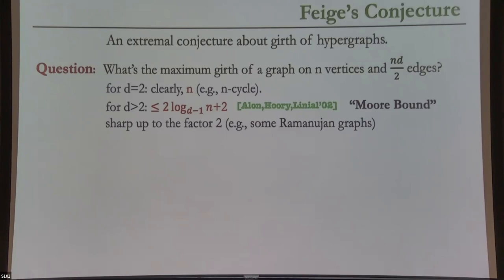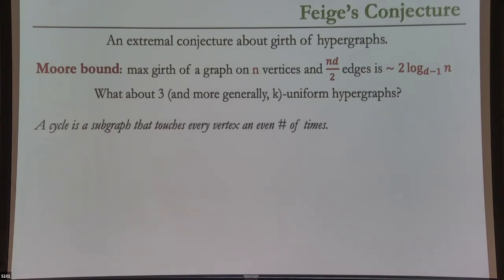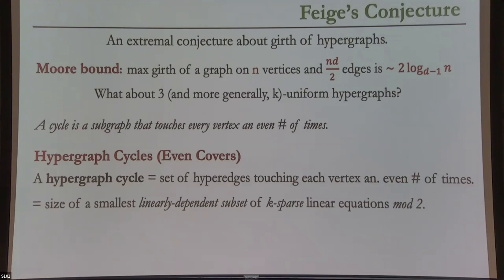That's not what I'm here for today. I'm going to ask the same question on hypergraphs. Given N vertices and some number of edges in a K-uniform hypergraph, how large can I make the length of the smallest cycle? You should ask: what does it mean to be a hypergraph cycle? I'll abstract a property of graphs to generalize it. A cycle in a graph is a subgraph — a collection of edges — so that every vertex appears an even number of times.